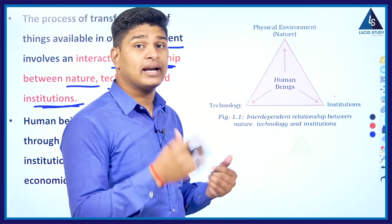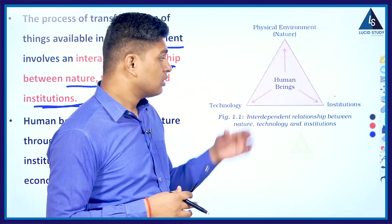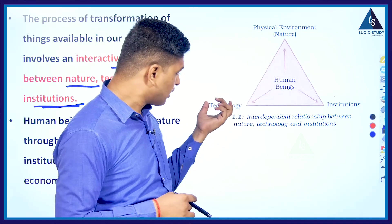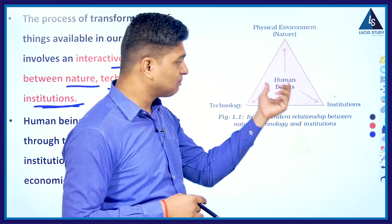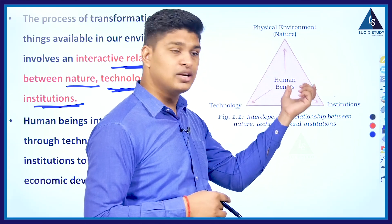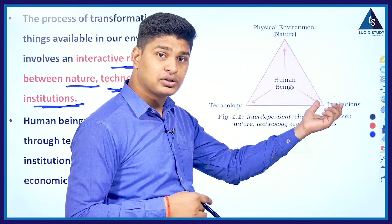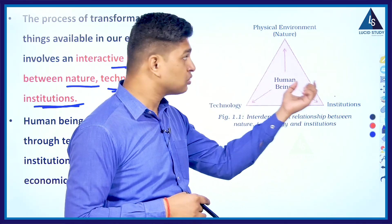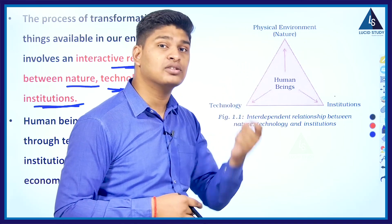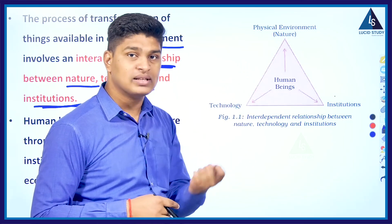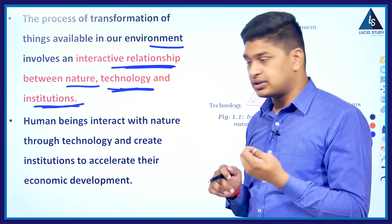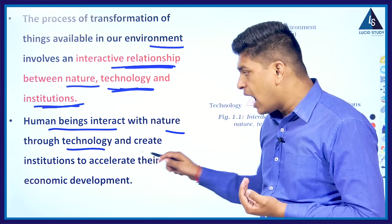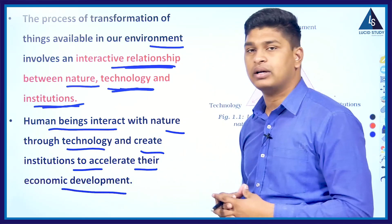As shown in the picture, human beings use technology to access nature, and at the same time they use institutions to ensure that technology is regulated. This technology is used by institutions to access nature, ultimately fulfilling the needs of human beings. That's why we say it is an interactive relationship — human beings interact with nature through technology and create institutions to accelerate their economic development.